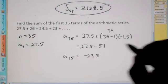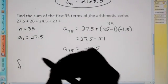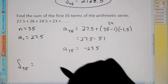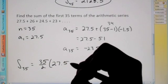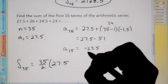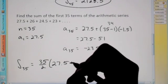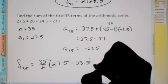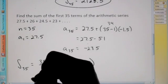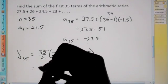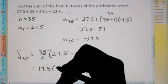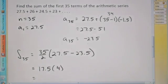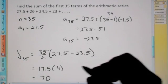So here is our last term, a sub 35. We can plug in now. The sum of the first 35 terms is equal to the number of terms over 2 times our first term plus our last term. Since the last term is negative, when you add a negative, we just put minus 23.5. Therefore we get 35 over 2, which is 17.5, times (27.5 minus 23.5), which is 4. So our final answer is 70. That would be our sum.